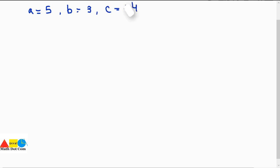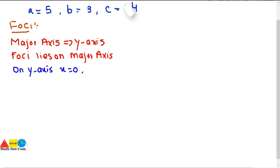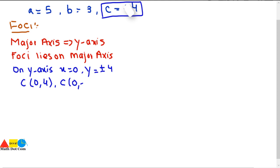Using these values we find the foci, vertices, and co-vertices. For the foci: since the major axis is the y-axis, and foci lie on the major axis, on the y-axis x = 0 and y = ±c = ±4. So the coordinates of the foci are C(0, 4) and C′(0, −4).